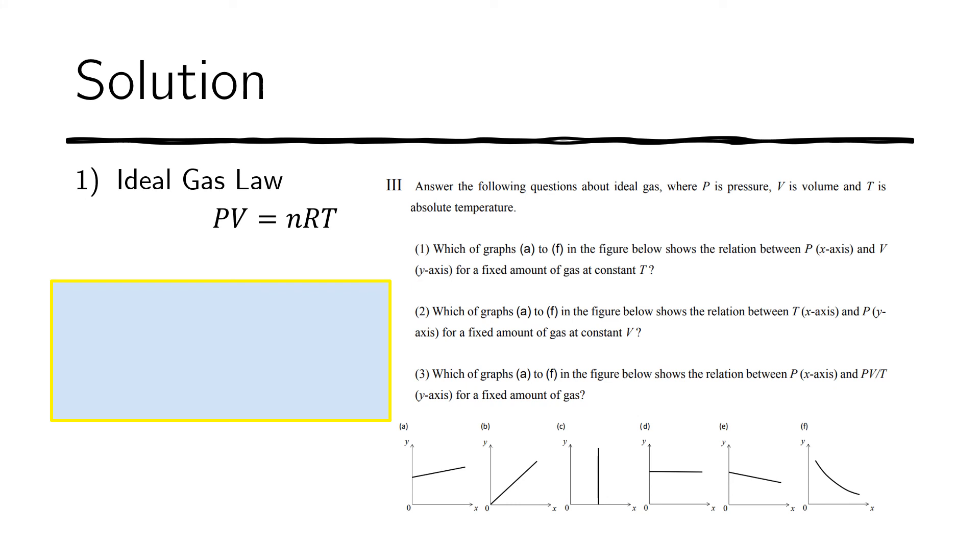Now for the last question, it says that P would be on the x-axis. So P equals x. And our y would be the expression PV over T. So PV over T equals y. And we are told that the amount of gas n is fixed. So n is constant. And therefore, n times R, because n and R are both constants, could be defined as another constant k.